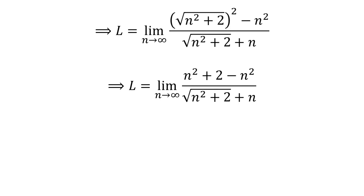Let us further simplify the numerator. The numerator is n squared plus 2 minus n squared. Further simplification gives us L equals the limit of 2 over square root of n squared plus 2 plus n as n approaches infinity.